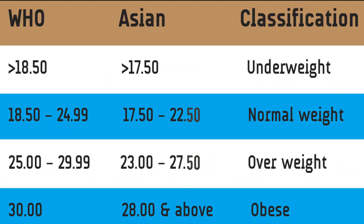For Asians as well as for Indians, the normal range varies from 17.5 to 22.5. If you are more than 22.5 and up to 27.5, you fall into the overweight category.